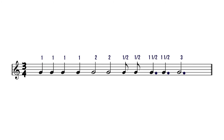From the time signature we know each bar must equal 3 crotchet beats. Adding up durations: the first 3 crotchets give us 1 plus 1 plus 1 equals 3, so we drop a bar line there. Next, 1 plus the minim worth 2 equals 3 — another bar line. Then 2 plus a half plus a half equals 3 — another bar line. And 1.5 plus 1.5 equals 3 — another bar line, leaving the last bar to the dotted minim.